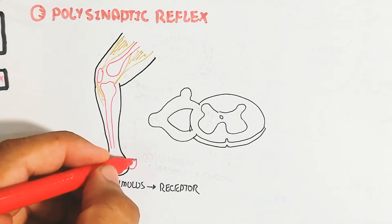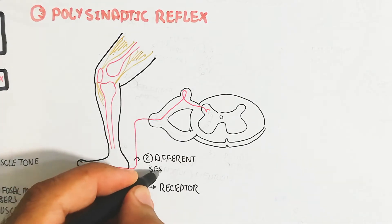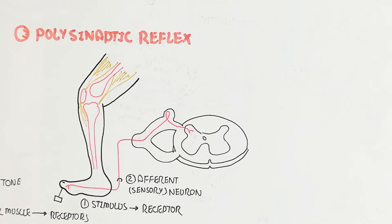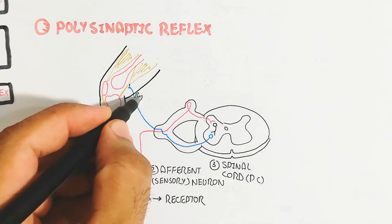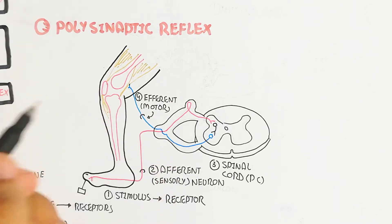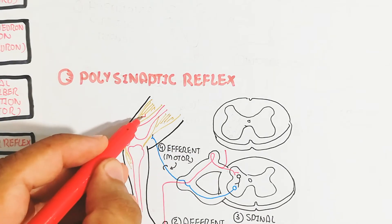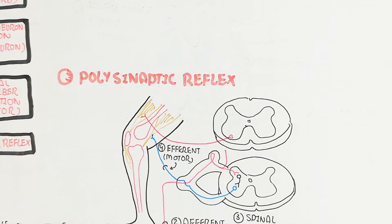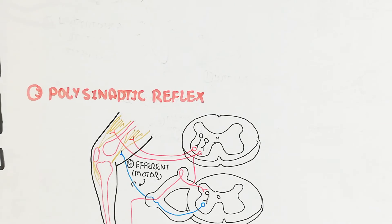The sensory neuron connects through the spinal cord with the interneuron for processing. After processing and communication, the signal goes to different sides of the muscle. Multiple synapses occur, so the flexor muscle contracts while the quadriceps extends and relaxes. This happens because different regions of the spinal cord communicate collectively.